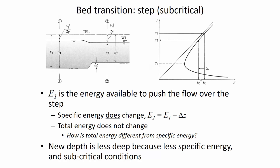The maximum delta Z that can be tolerated is limited by the energy associated with the critical depth. Once delta Z is larger than the gap between E1 and the minimum specific energy at the critical depth, choking will occur and water will pool upstream. We'll talk about that maximum limit in detail later.